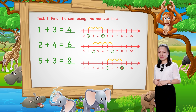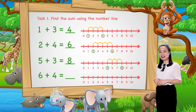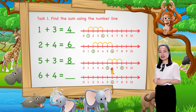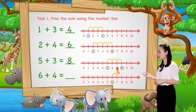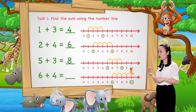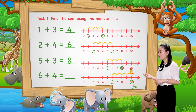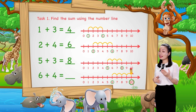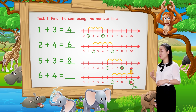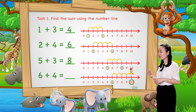The last one: find 6 plus 4. We start from number 6. Then jump 4 numbers to the right. Then see the number where we stop to find the sum. Here we stop at number 10. Therefore, 6 plus 4 equals 10.